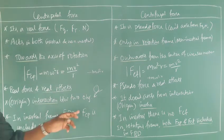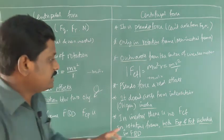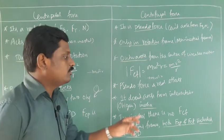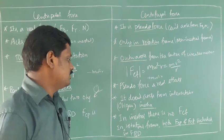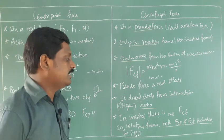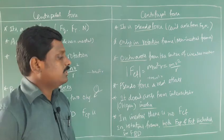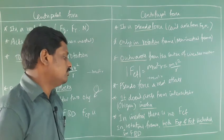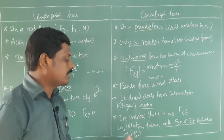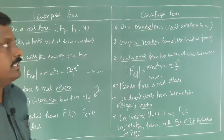In an inertial frame, in a free body diagram, only the centripetal force is included. In an inertial frame there is no centrifugal force. But in a rotating frame, that is a non-inertial frame, both centripetal force and centrifugal force are included when drawing the free body diagram.